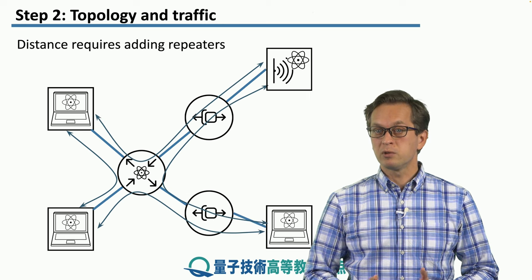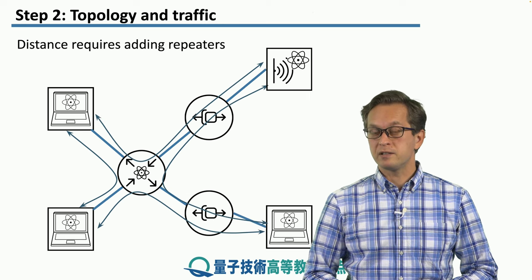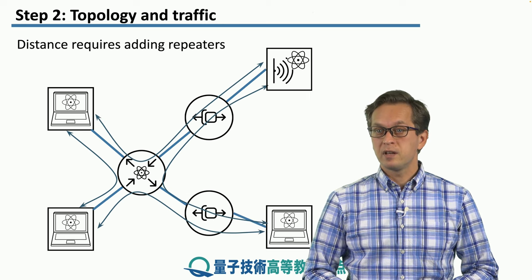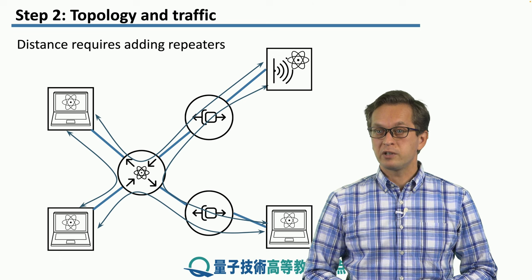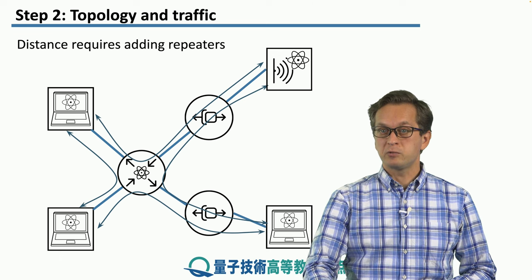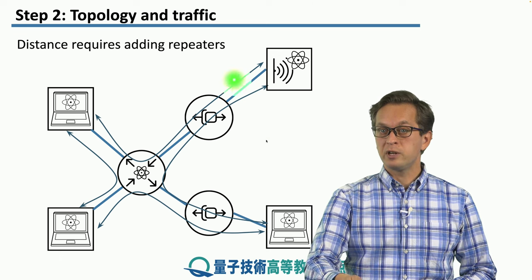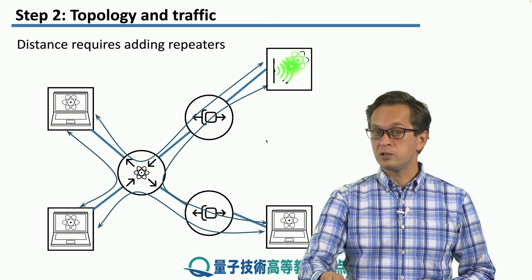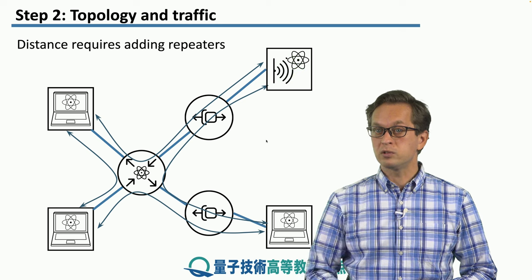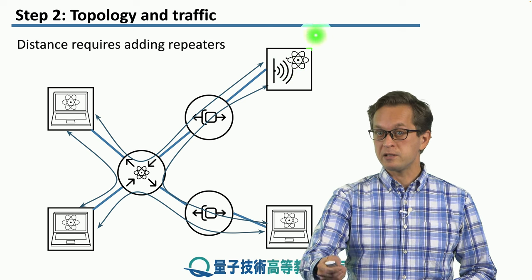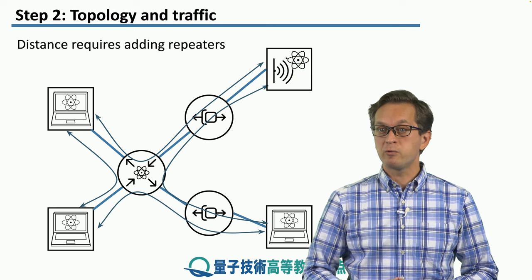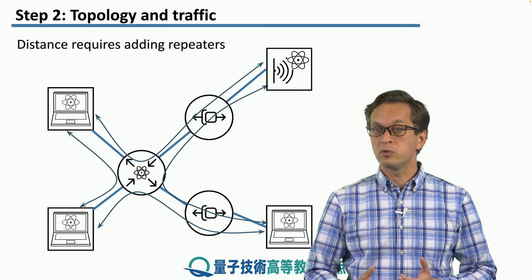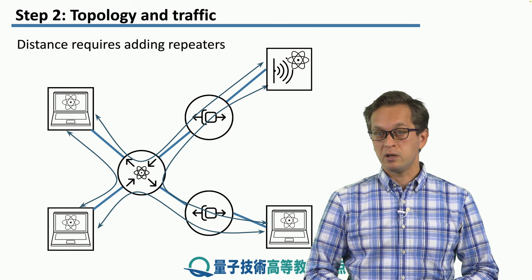Also, in the real world, we may want to think about distance. The geographical needs of our network will determine whether we actually can connect the router to an end node — in this case, a sensor node — directly, or if we need one or multiple quantum repeaters.